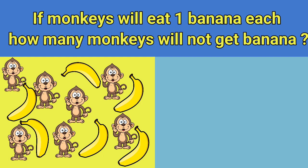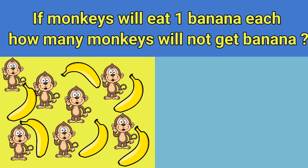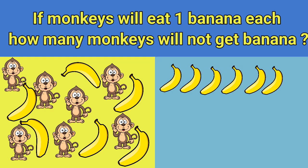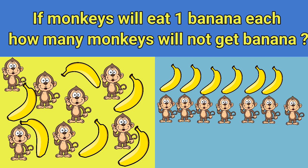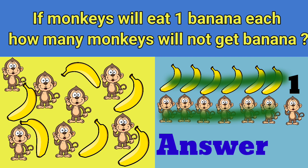If monkeys will eat one banana each, how many monkeys will not get a banana? Let's count. There are six bananas and there are seven monkeys. If one monkey eats one banana, six monkeys will eat six bananas. How many monkeys are left? One. So the answer is one monkey will not eat any banana.